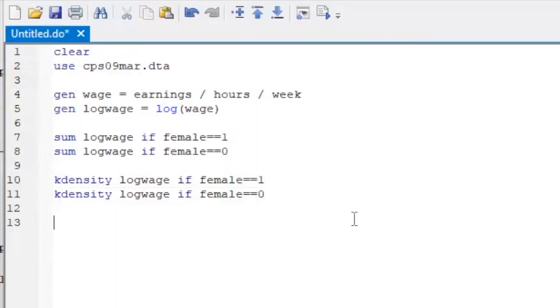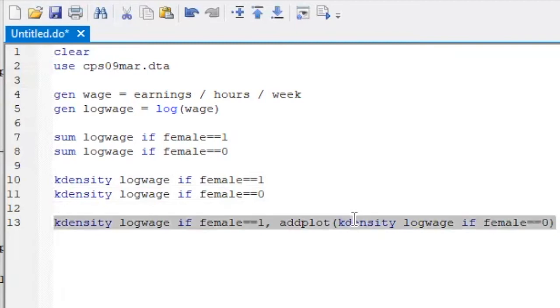However, we can overlay one density over the other if we use the add plot option. Type the entire command line inside the pair of parentheses of the add plot option. Here, the baseline density is for women, and the added density is for men.